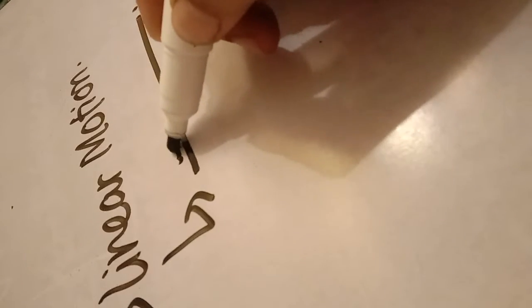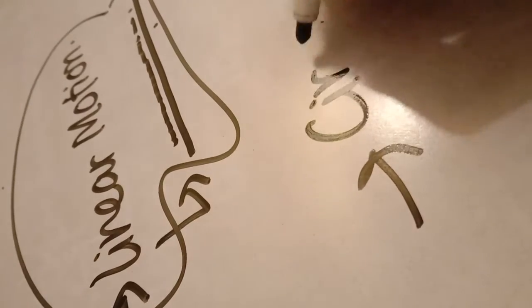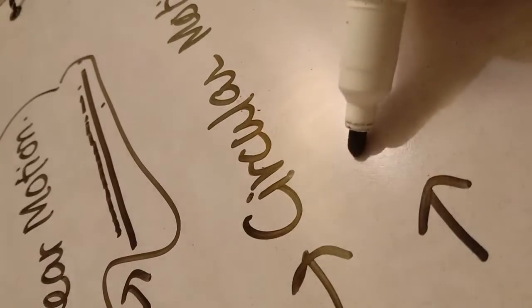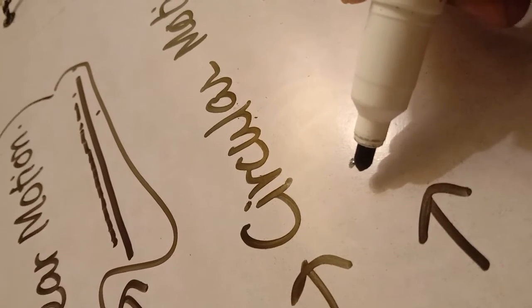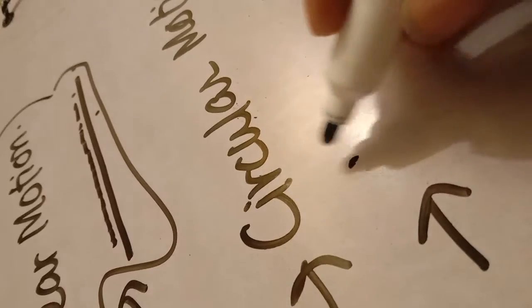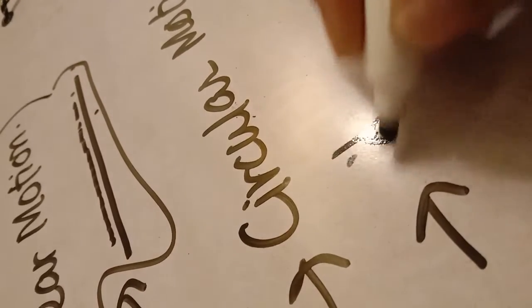Now we have three types of motion. The first one is linear motion, or translatory motion. This means that a body is doing movement or changing its position in a straight line. For example, a car moving on a straight road is doing linear motion.